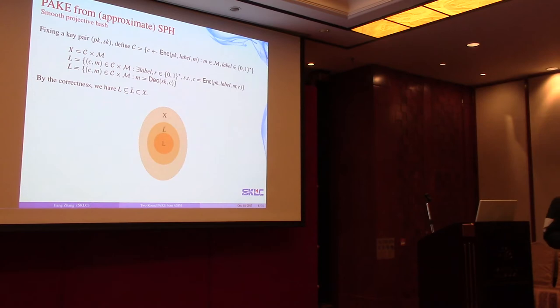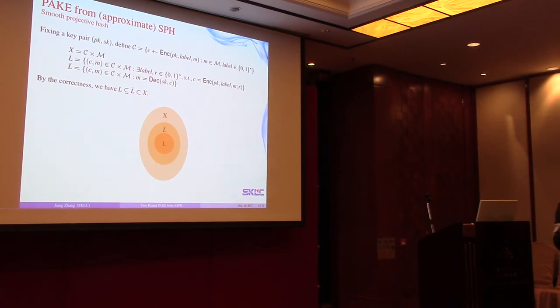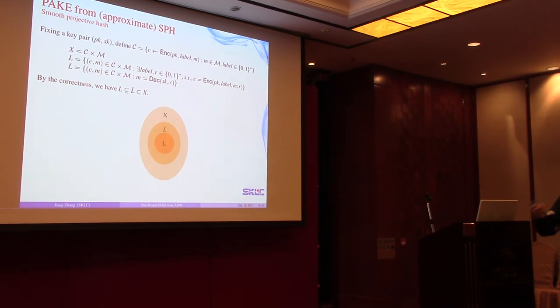The correctness of the PKE scheme requires that the decryption algorithm always works correctly and will recover the message from the ciphertext. Given a key pair, PKE and a secret key, we can define the space of valid ciphertext, which are all the possible outputs of the encryption algorithm. We define three sets: X, L, and L bar, where X contains all the ciphertext-message pairs, L is a subset which satisfies the encryption relation, and L bar satisfies the decryption relation.